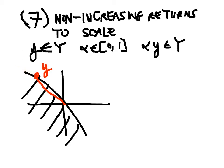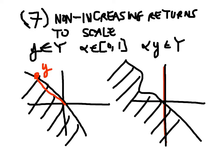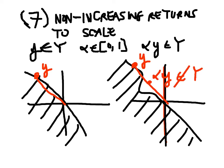It's also not possible to scale up under this condition. How would the possibility of scaling down be violated? If I have a production set with an anomaly, it is possible to pick a production plan y and a value for alpha — for example, 0.5 — and see that alpha y is not in the production set. This violates the condition of non-increasing returns to scale.